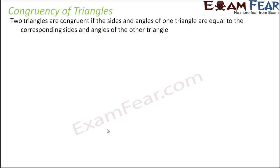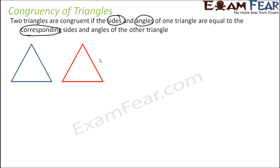By definition, two triangles are congruent if their corresponding sides and corresponding angles are equal. Three critical terms: sides, angles, and corresponding. That means each side of one triangle equals the corresponding side of the other, and each angle equals the corresponding angle. If that is the case, the two triangles will overlap perfectly.